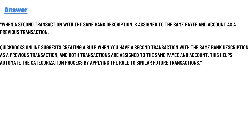QuickBooks Online suggests creating a rule when you have a second transaction with the same bank description as a previous transaction, and both transactions are assigned to the same payee and account. This helps automate the categorization process by applying the rule to similar future transactions.